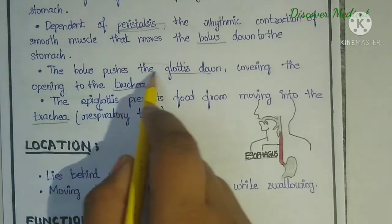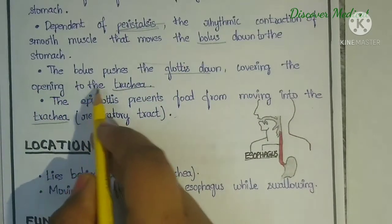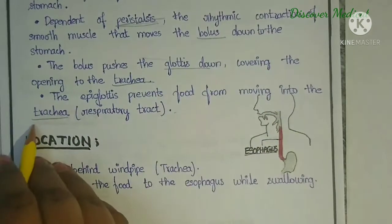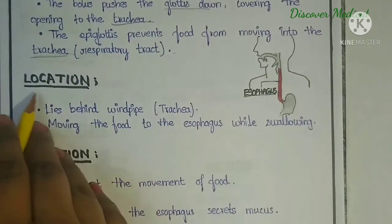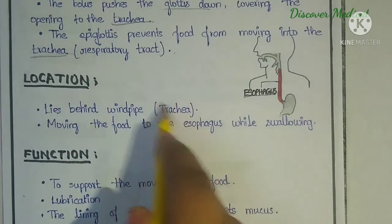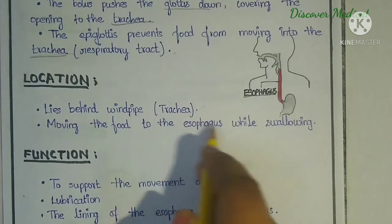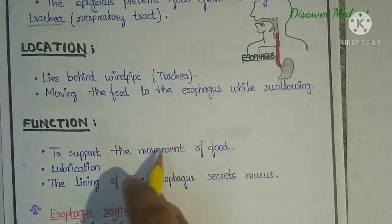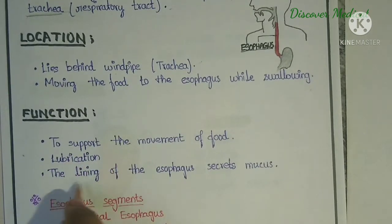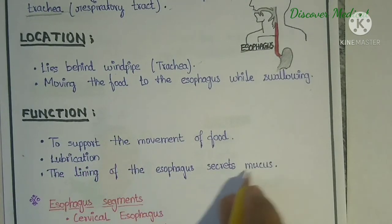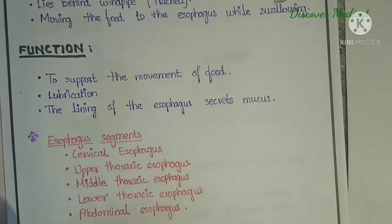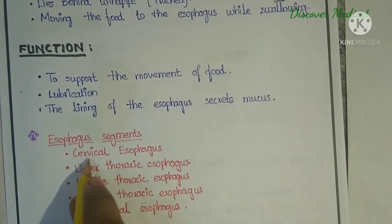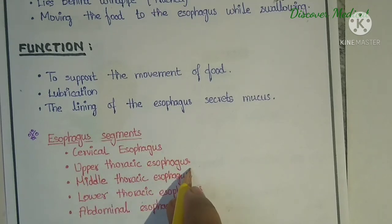The bolus pushes the epiglottis down, covering the opening to the trachea. The epiglottis prevents food from moving into the trachea. The esophagus lies behind the windpipe (trachea), moving food while swallowing. Its function is to support the movement of food. The lining of the esophagus secretes mucus for lubrication.